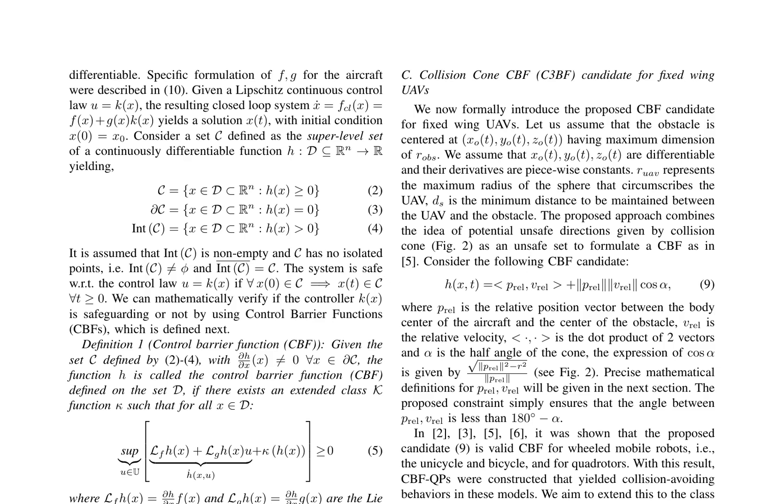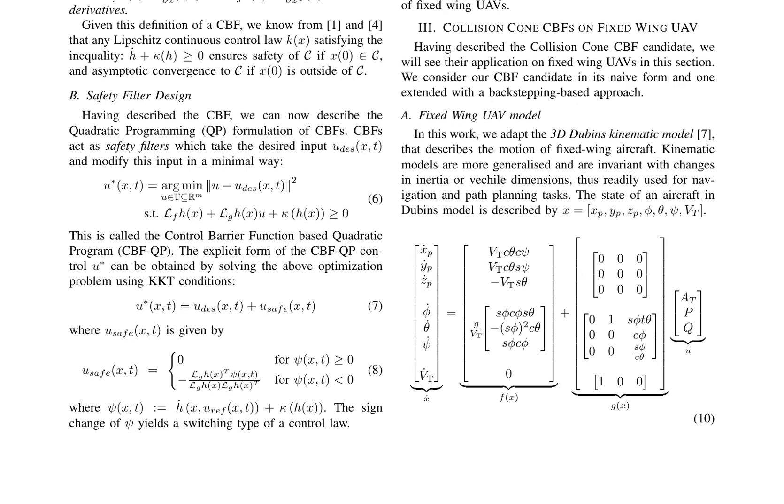To determine the control law U(X,T), a quadratic programming (QP) approach is employed. Here, the desired input UDES(X,T) is modified to prioritize safety while minimizing deviation from the desired input. The resulting closed-loop system is proven to be safe with respect to the control law U(X,T) if the initial condition X(0) is an element of C, where C is the set defined by the CBF. The paper provides equations for the system dynamics and control input, underscoring the crucial role of the CBF in preventing collisions. This work contributes significantly to the field of UAV safety, offering a novel approach to collision avoidance that could potentially revolutionize the way we design and operate fixed-wing UAVs.